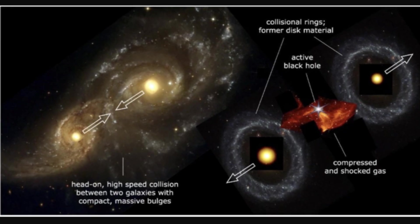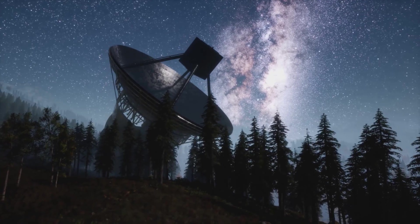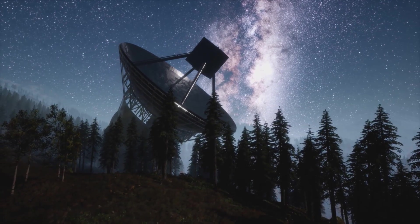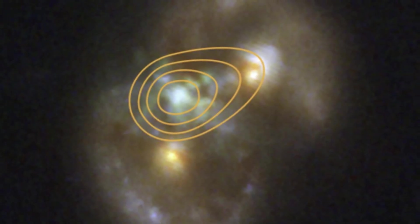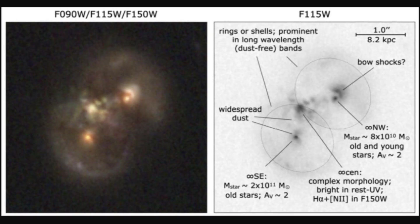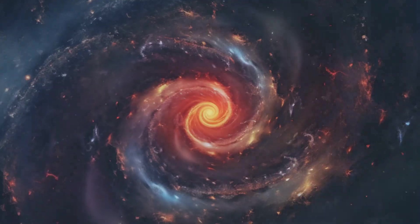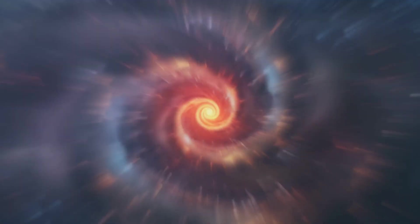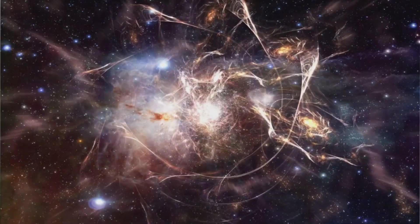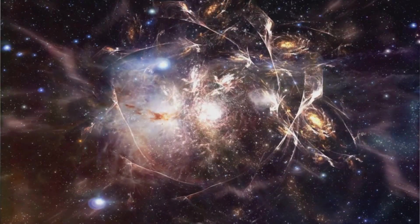Until now, this was just a theory. No one had seen a direct collapse black hole in action. The infinity galaxy's off-center black hole might be the first real evidence of this process. If true, it could solve one of astronomy's biggest mysteries. The universe may have more than one way to make a cosmic giant.